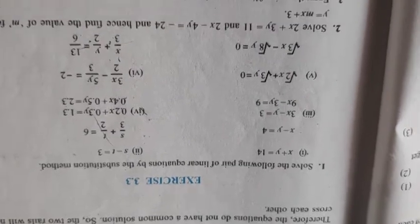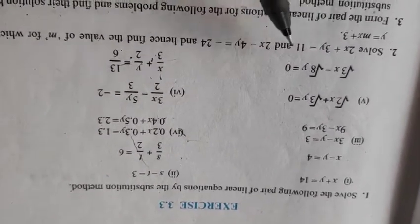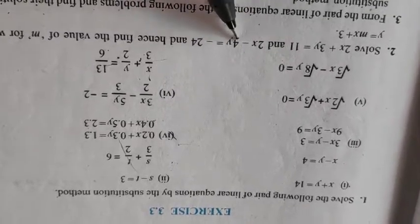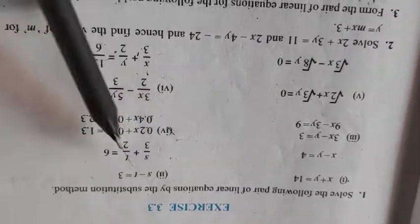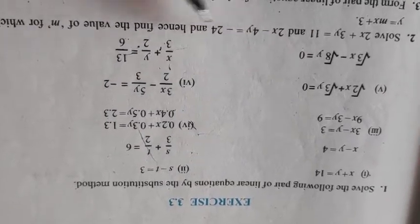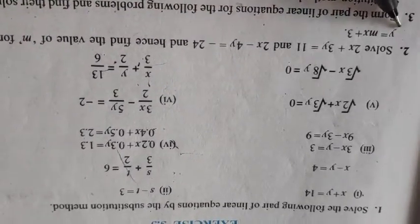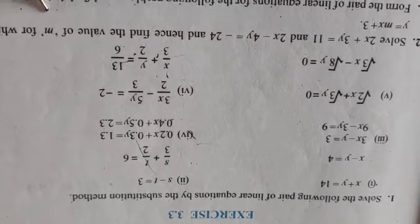Now we continue further with the next question. What is the next question? Solve 2x plus 3y is 11 and this 2x minus 4y is minus 24. You have to solve this equation first by substitution. That would be the easiest way. Any of this sum you have done. Same method you have solved this. And then you get the x and y value which you have to substitute in this equation, y equal to mx plus 3, so that you can calculate the value of m. Let us see how we will do it.